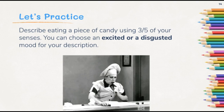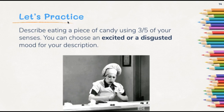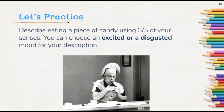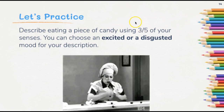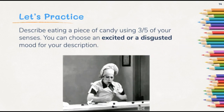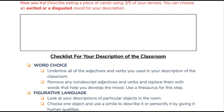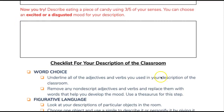The next challenge on your handout is to practice targeting the senses by describing eating a piece of candy using three out of the five senses. Have a specific mood in mind — you could choose either an excited mood or a disgusted mood as you eat the candy. Make sure you type that description, which should include a lot of imagery, on your lesson handout.